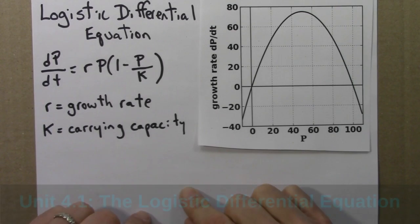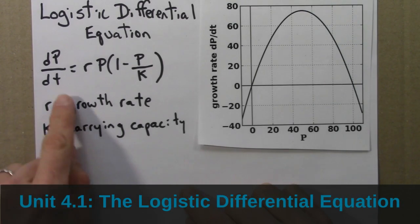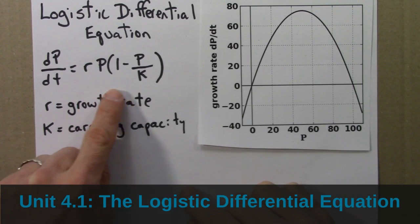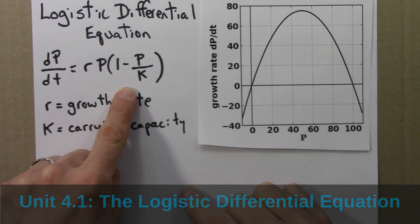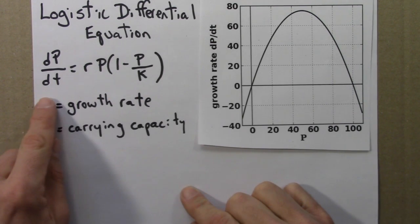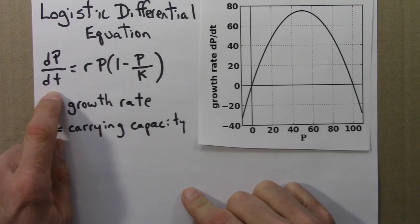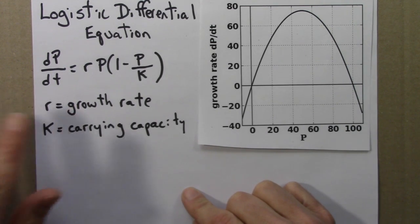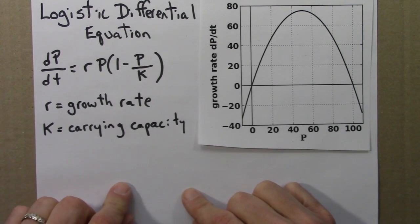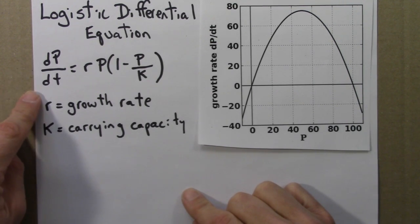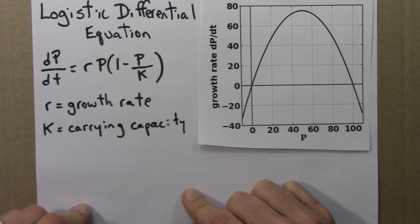So here is the logistic differential equation: dp/dt equals rp(1 minus p over k). It looks similar to the logistic equation from the previous unit. However, this is a differential equation with dp/dt on the left, so it will have somewhat different properties. I'll compare and contrast the differential equation and the iterated function in the next video. For now, I want to focus on the properties of this equation.